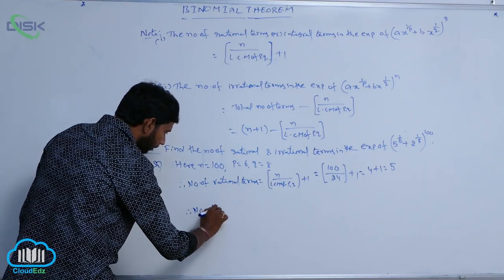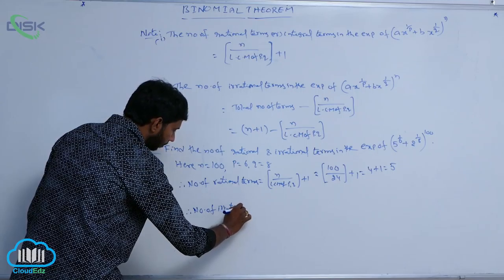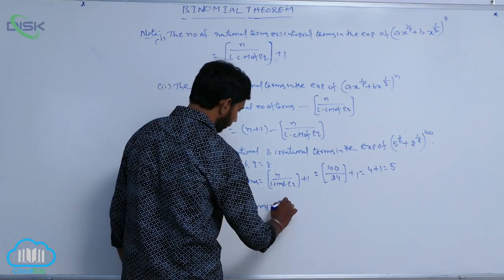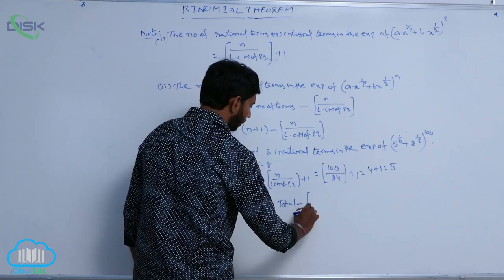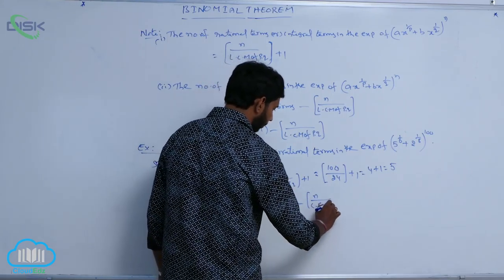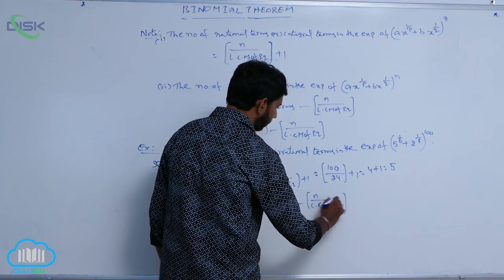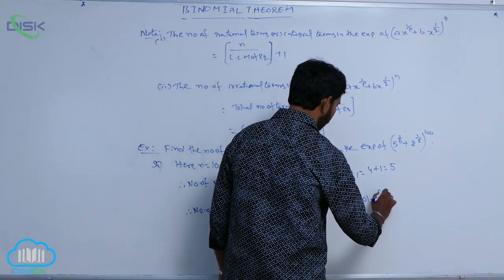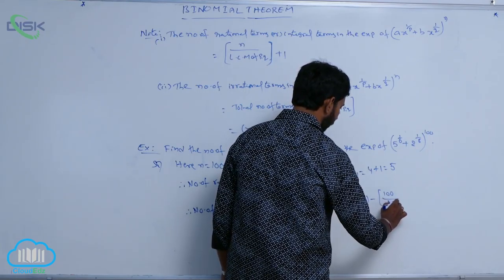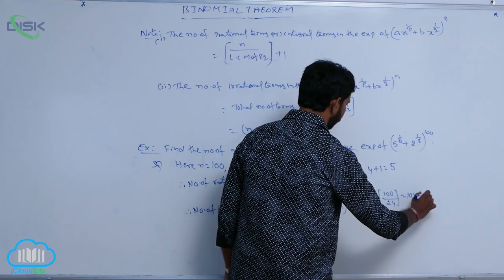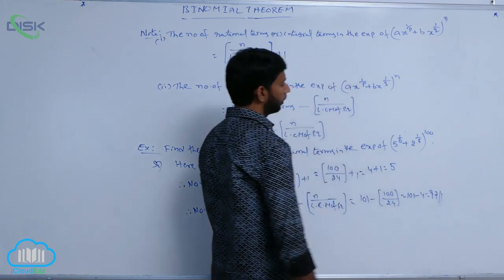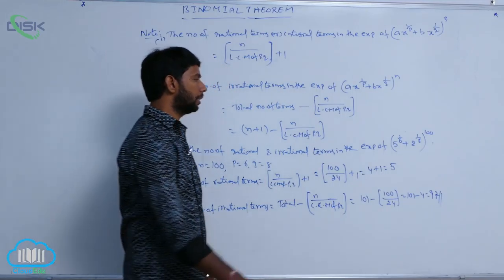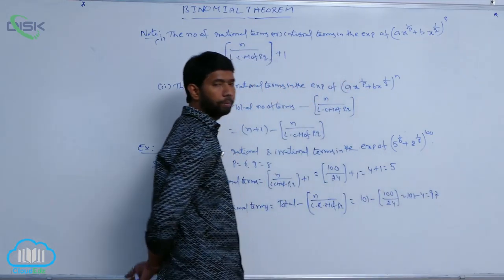Therefore, the number of irrational terms is equal to total minus floor of n divided by lcm(p, q). That is 101 minus 4, which equals 97 — the number of irrational terms. So the number of rational terms is 5 and the number of irrational terms is 97.